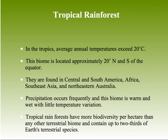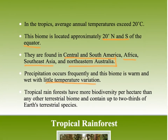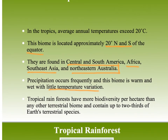The last biome we're going to talk about is the tropical rainforest. In the tropics, you have very consistent temperature and precipitation, and a lot of growth. It's mainly located between 20 degrees north and south of the equator — Central and South America, Western Africa, Southeast Asia, and parts of Australia. Tropical rainforests hold more biodiversity per hectare than any other terrestrial biome, with approximately two-thirds of Earth's terrestrial species found there.